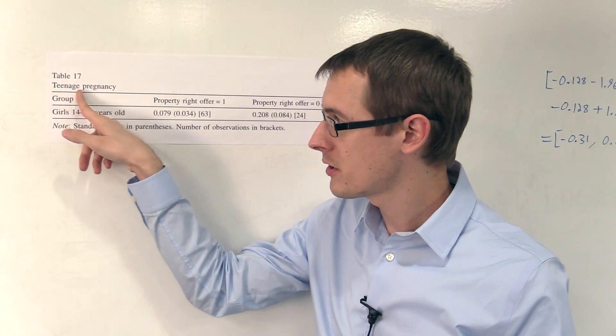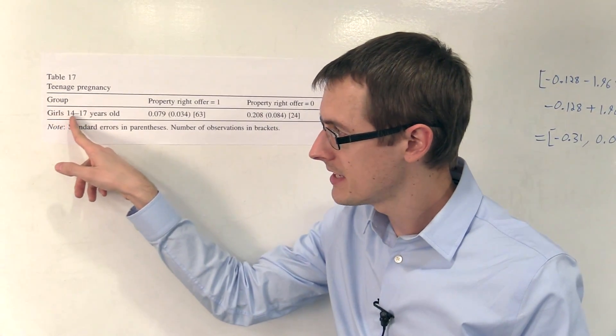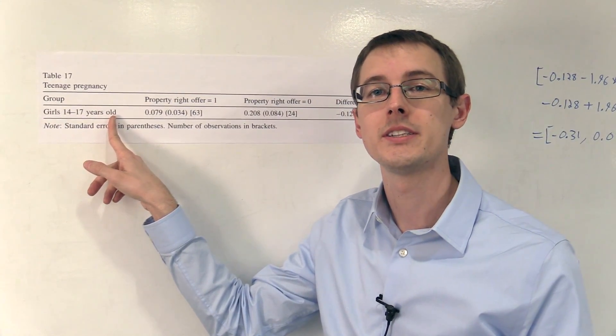Our outcome variable is going to be teenage pregnancy, whether a girl is pregnant or not. And our units of analysis are girls ages 14 to 17 years old.